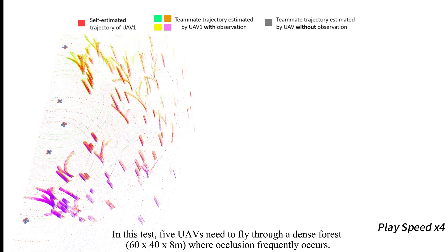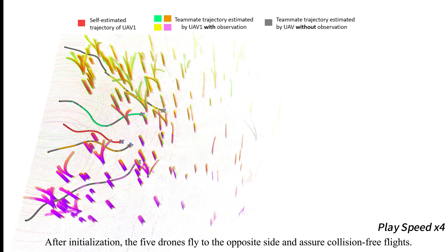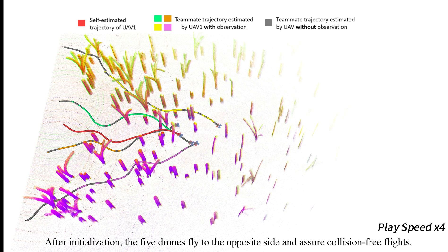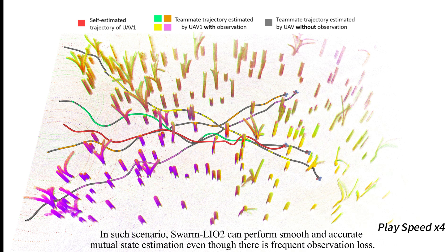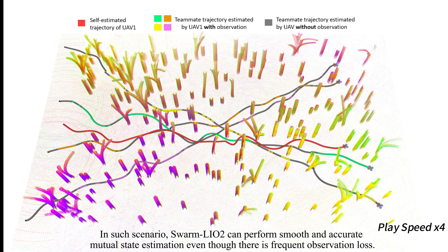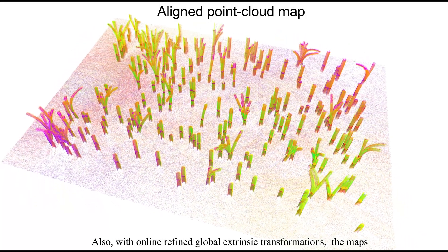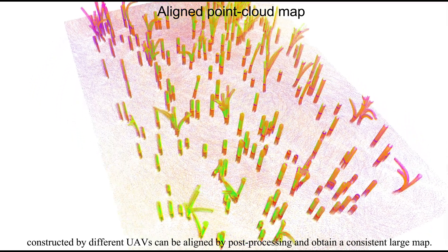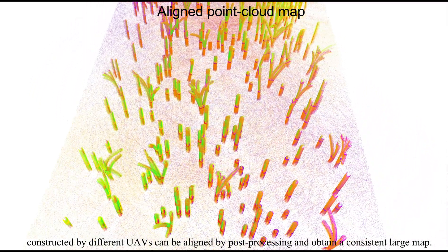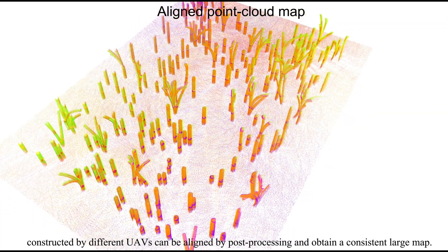In this test, five UAVs need to fly through a dense forest where occlusion frequently occurs. After initialization, the five drones fly to the opposite side, ensuring collision-free flights. Swarm LiO2 can perform smooth and accurate mutual state estimation even with frequent observation loss. Also, with online refined global extrinsic transformations, the maps constructed by different UAVs can be aligned by post-processing to obtain a consistent large map.